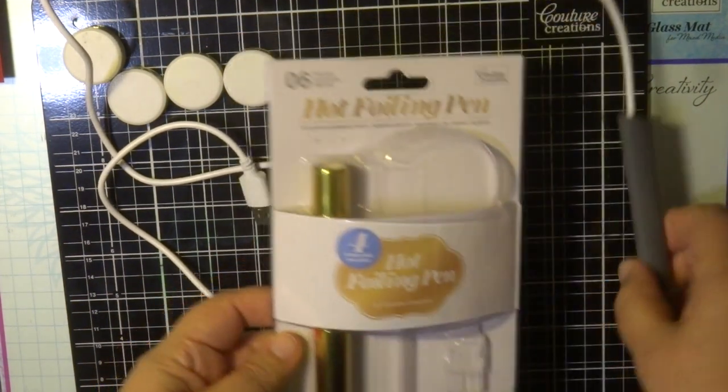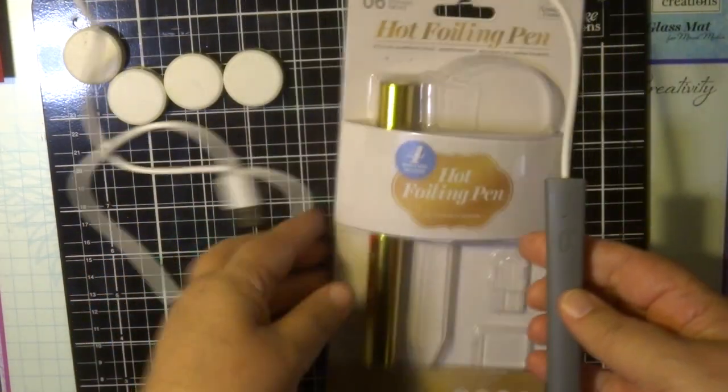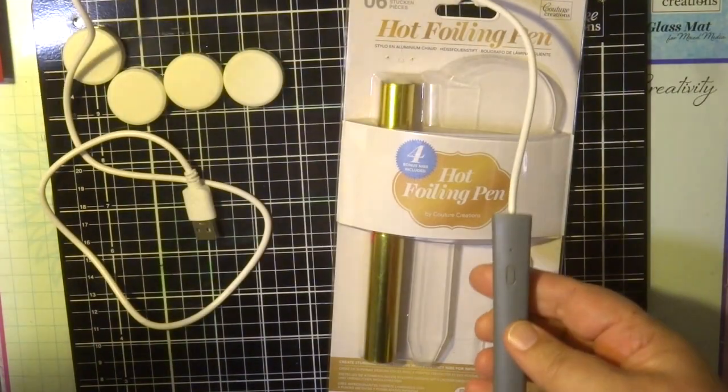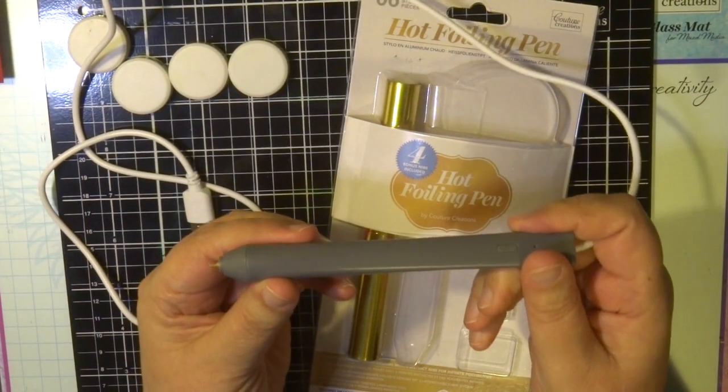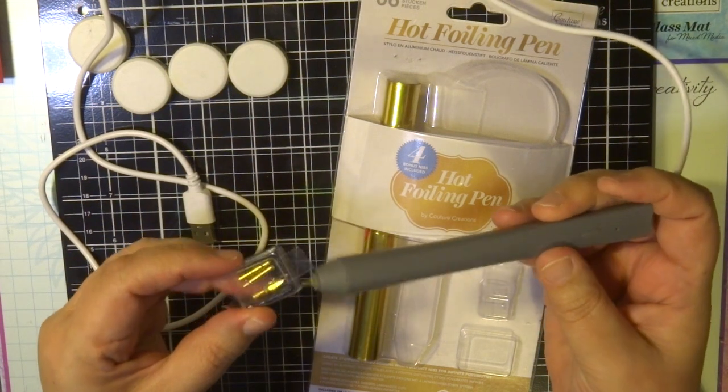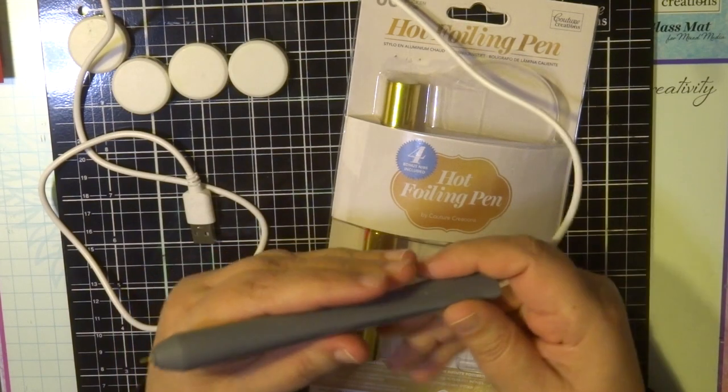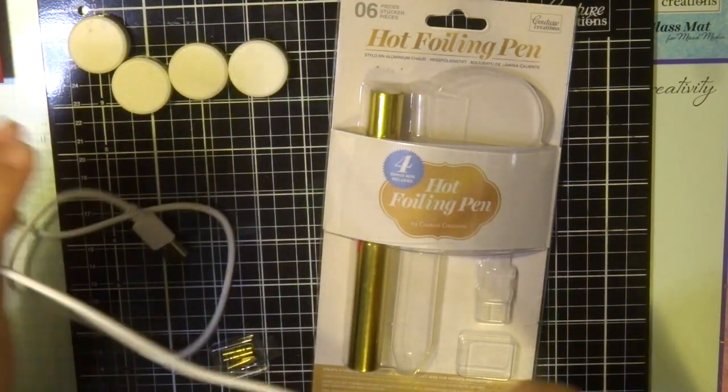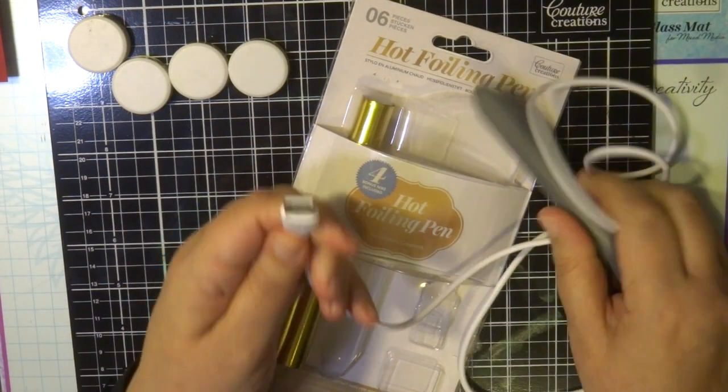It's a great way of using this quick and easy foiling pen that's so versatile with all lots of different mediums. It comes with four different nibs and different size nibs. It's very portable and it has a USB plug.